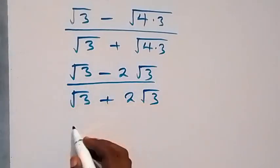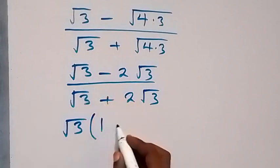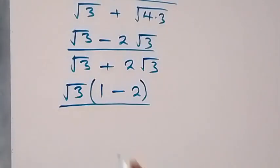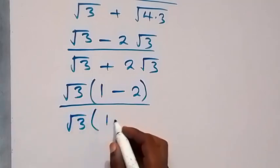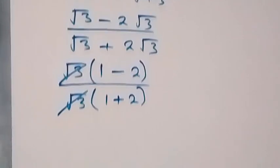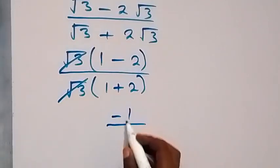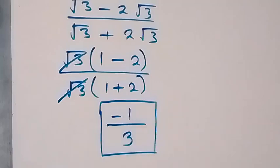We have root 3 common. In the numerator we have root 3, what is left is 1 minus 2. From the denominator, we also have root 3 common, so we have root 3 into brackets 1 plus 2. Root 3 cancels out. We have 1 minus 2, that's minus 1, then 1 plus 2, that's 3. So we also have minus 1 over 3.